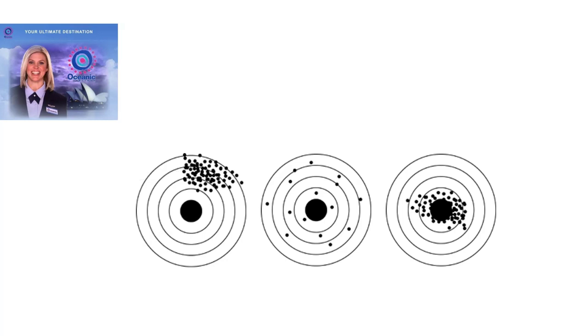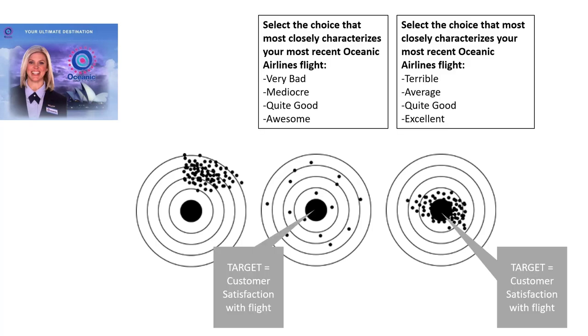Now let's take a look at two more examples where we're trying to measure customer satisfaction with a flight. Both of these questions look identical. Select the choice that most closely characterizes your most recent Oceanic Airlines flight. There are four options from most negative to most positive. The one on the left says very bad, mediocre, quite good, and awesome. And the one on the right says terrible, average, quite good, and excellent.